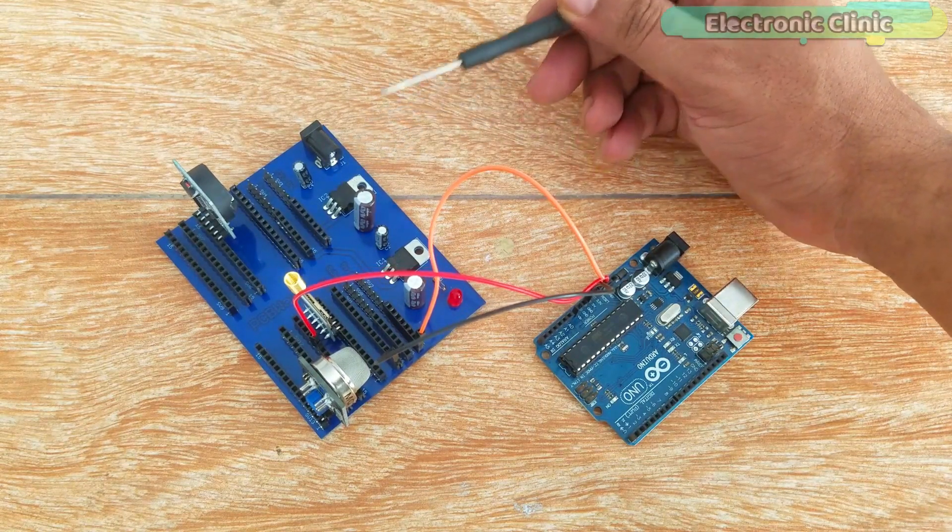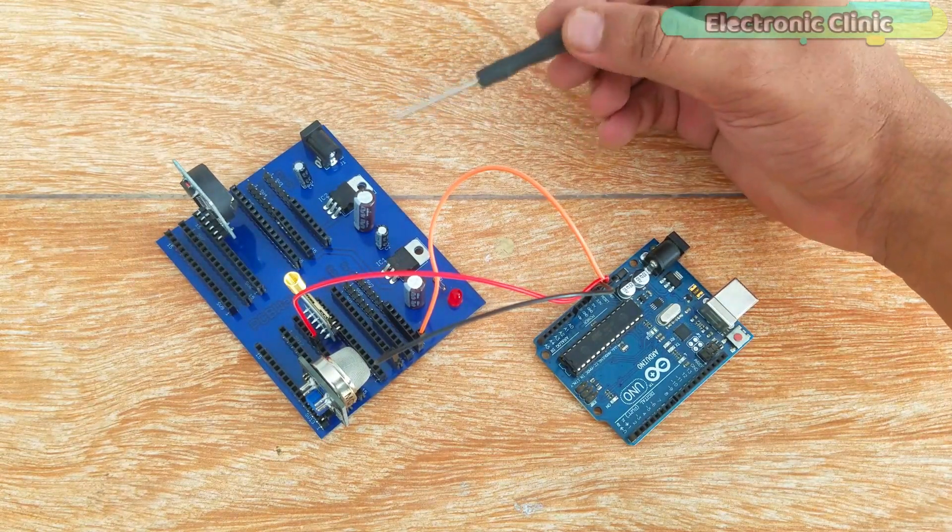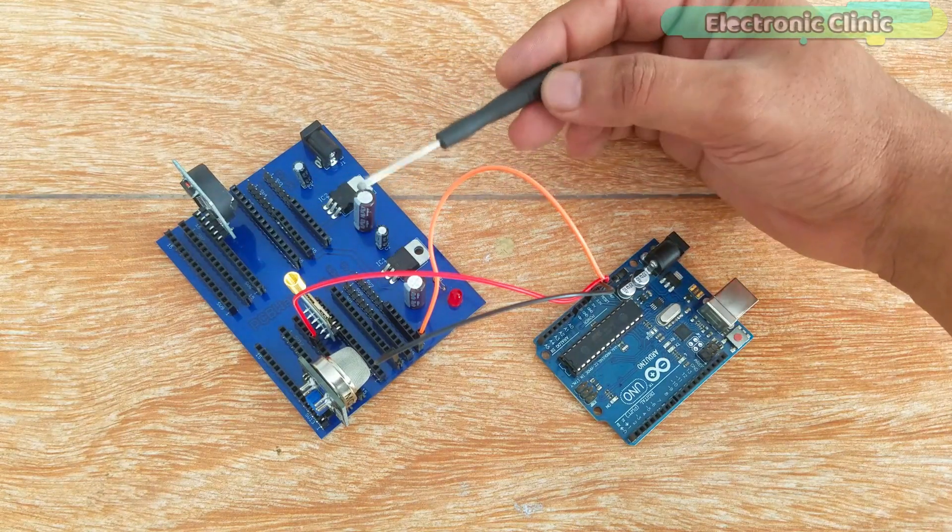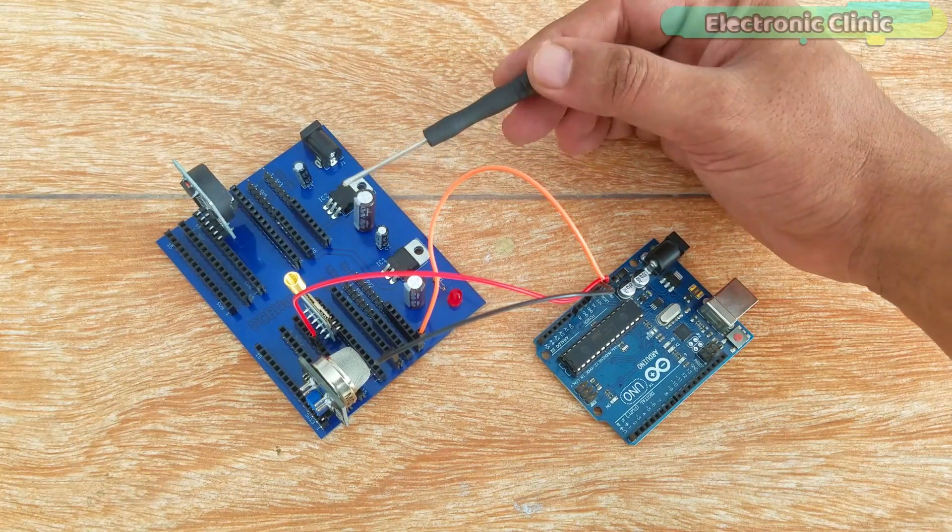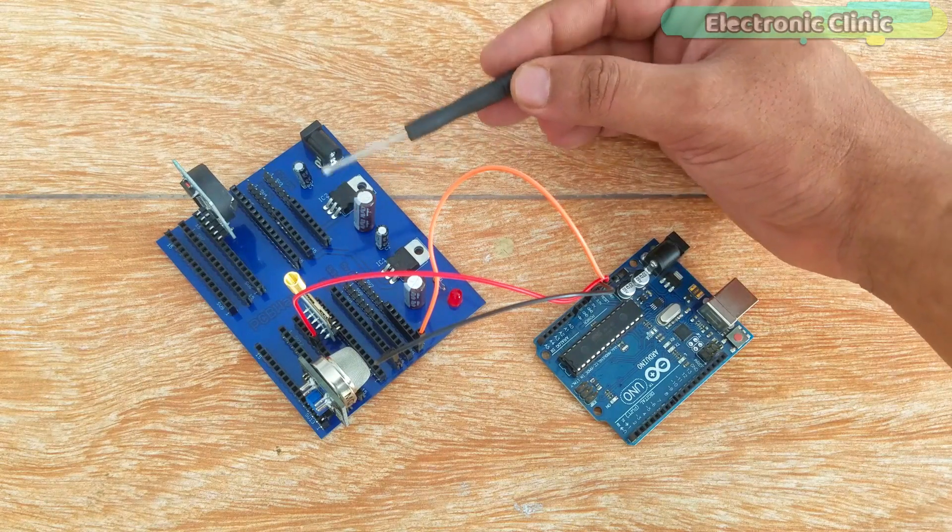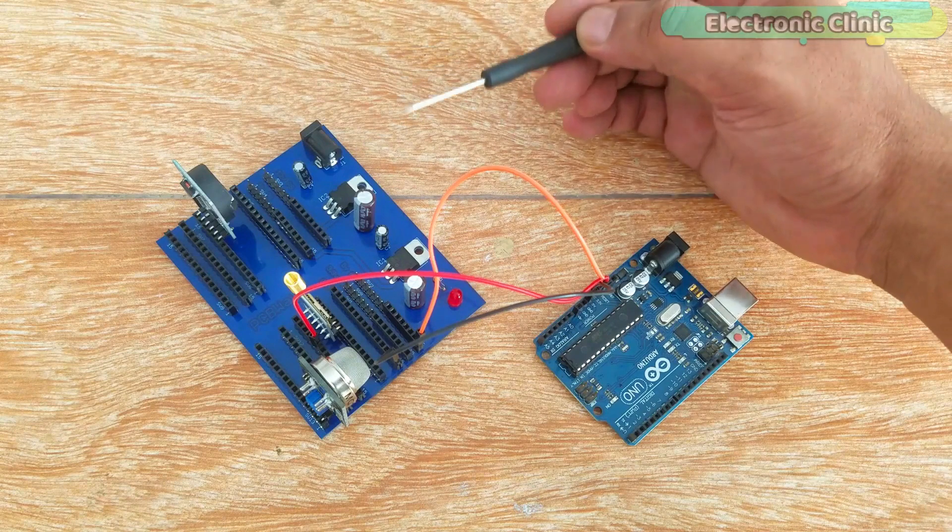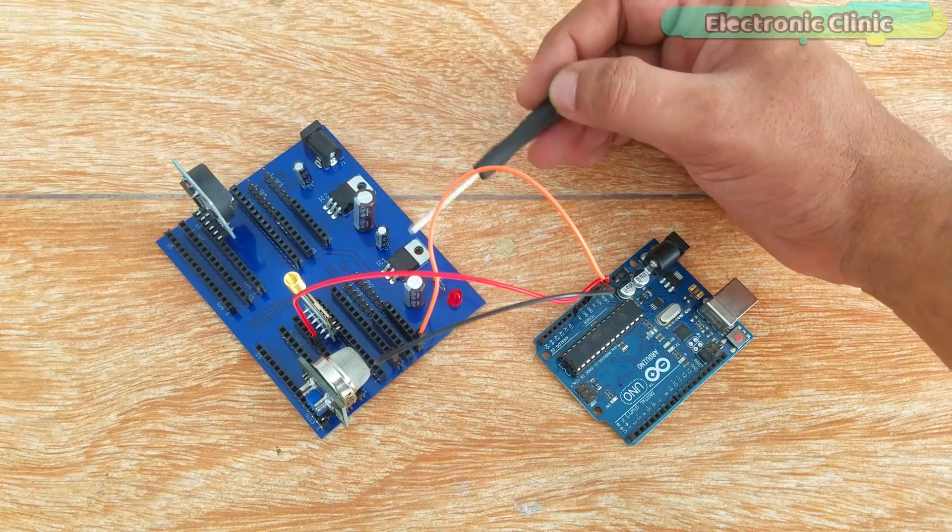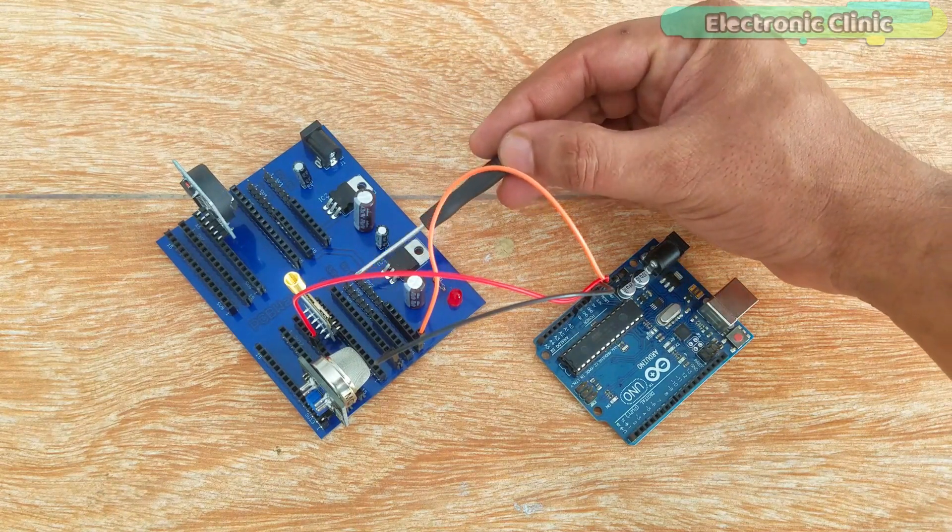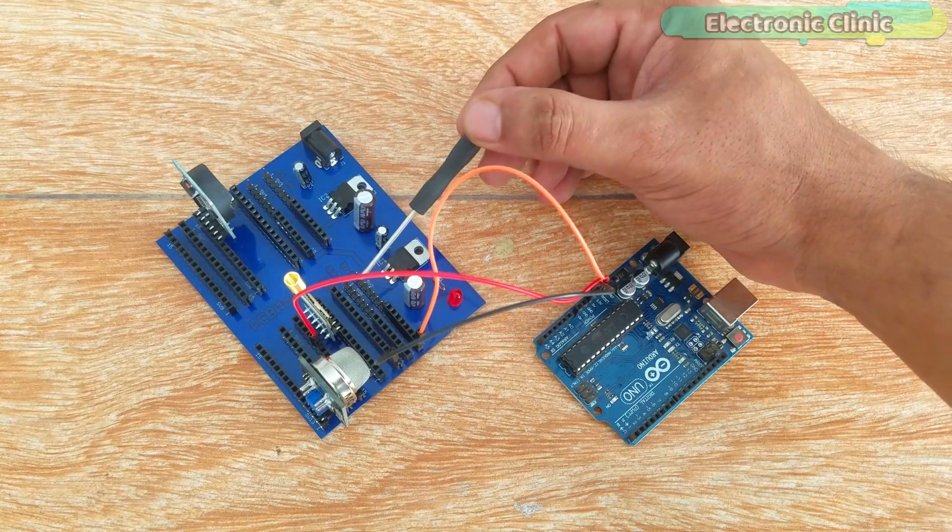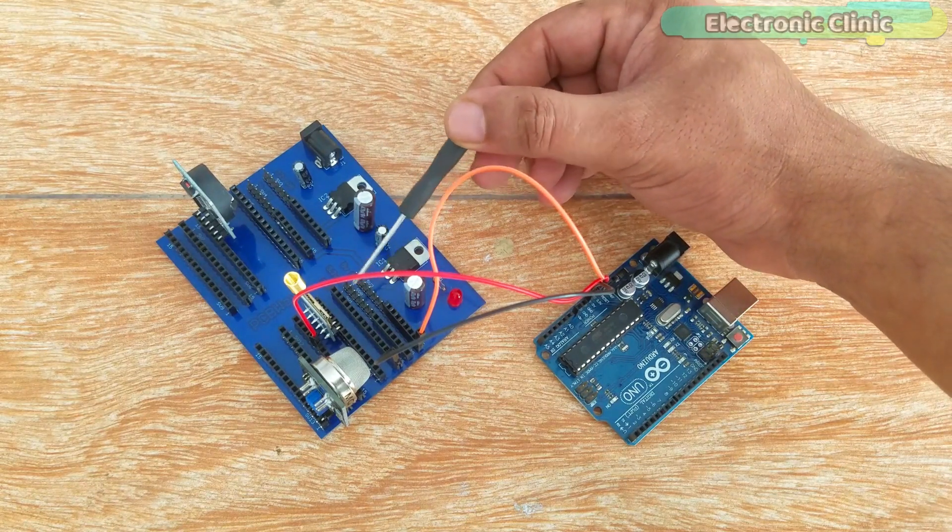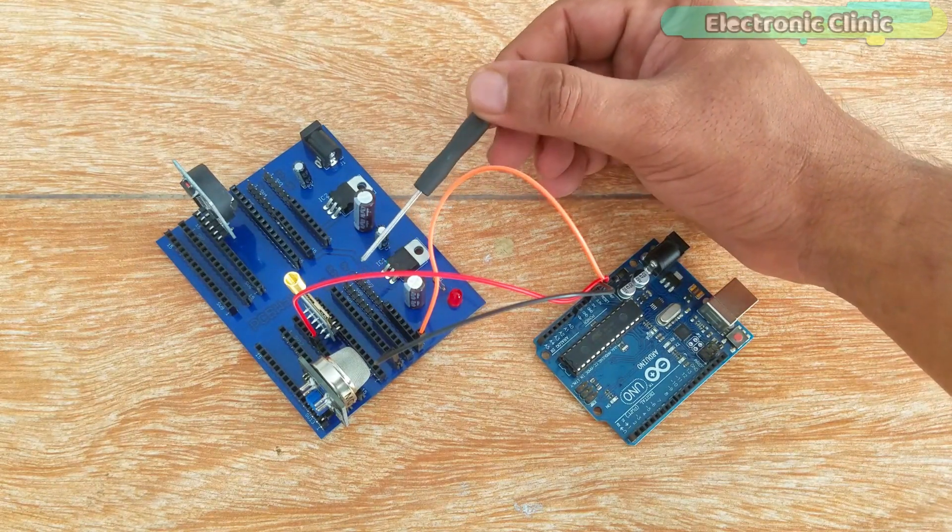Number 4. Instead of using a breadboard my designed power supply board can also be used as the development board. You can easily connect sensors with less wiring. Number 5. In this power supply board the male and female headers are used. So this way you can use male to male and male to female type jumper wires. Isn't it amazing?